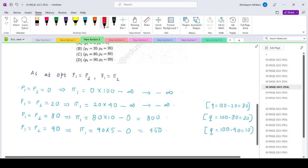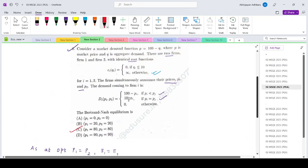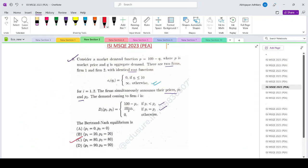So out of the four, the one which gives you the highest profit is option C, which is P1 equals P2 equals 80. So the correct option for this is option number C. Thank you.